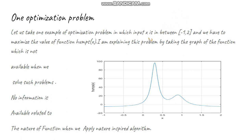The first point is we have to define the input. Here you can see the input is x, and it lies between -1 and 2. That range is known as the search space. Whatever function we want to maximize or minimize is known as the fitness function. Here we want to optimize f(x), so this will be our fitness function.